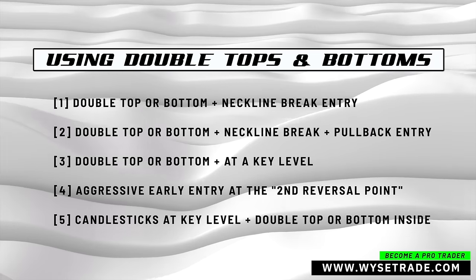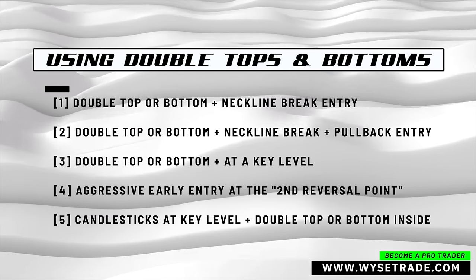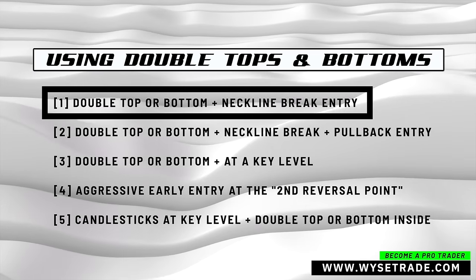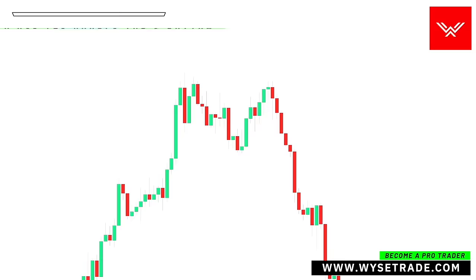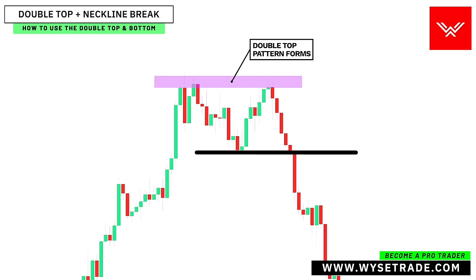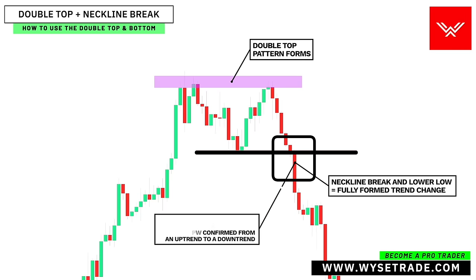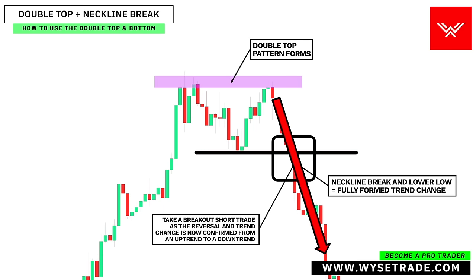Here are the best ways to use the double top and double bottom pattern. Starting with the first, which is a neckline break entry. You have your double top pattern that forms. This reversal point between gives you your neckline. Once price breaks the neckline and makes a lower low, you have a fully formed trend change. You would then take a breakout entry short after the neckline break, as the reversal and trend change is now confirmed from an uptrend to a downtrend.